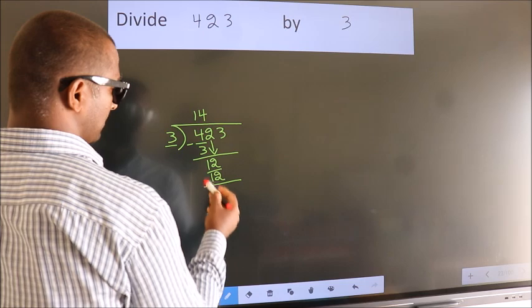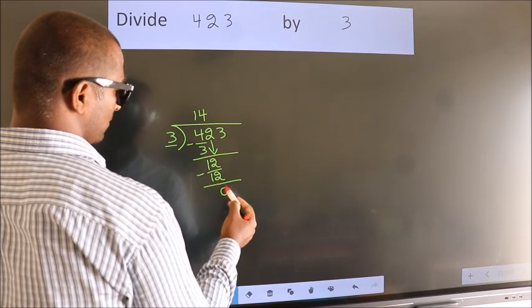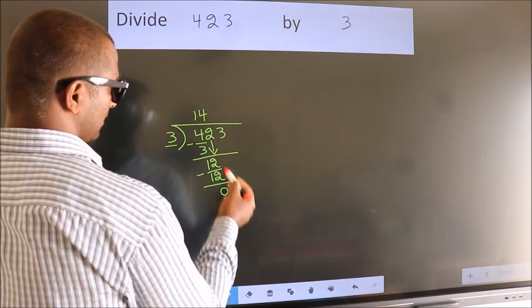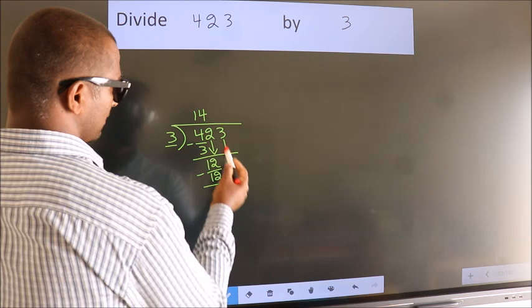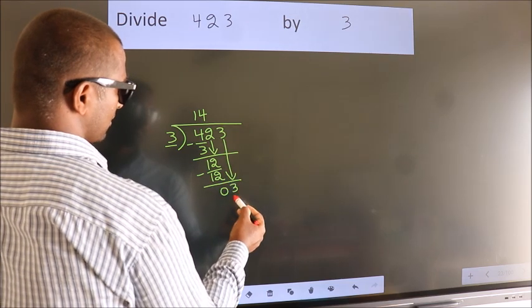Now we subtract. We get 0. After this, bring down the beside number. So, 3 down. So, 3.